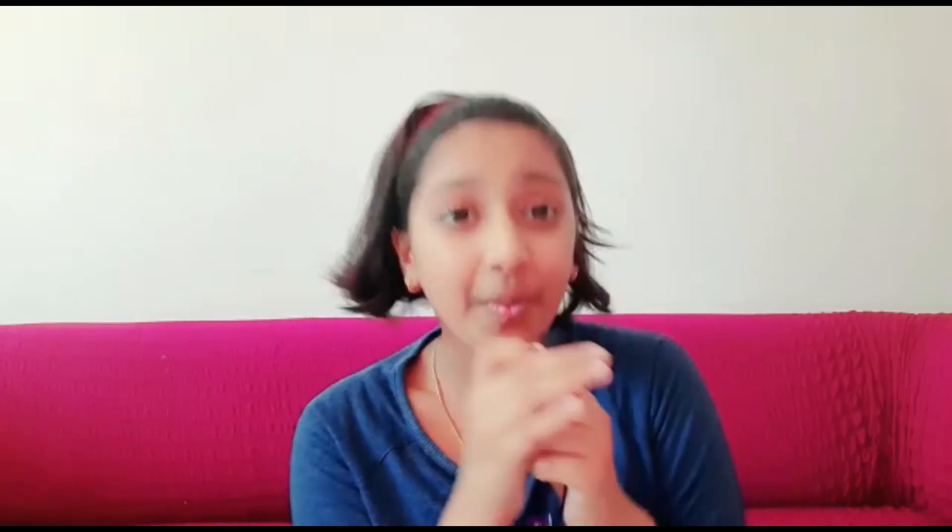In summary: we chew food with our teeth, it mixes with saliva, then travels to the throat and esophagus, then to the stomach, then to the small intestine and the large intestine, and finally to the rectum and out through the anus. The anus is the opening where the gastrointestinal tract ends and exits the body — it starts at the bottom of the rectum, the last portion of the colon.